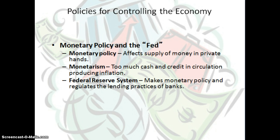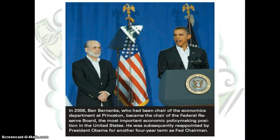The Fed also controls interest rates, which can increase or decrease the amount of loans given out. In this picture, you see Ben Bernanke, who had been chair of the Economics Department at Princeton and then became chair of the Federal Reserve Board — the most important economic policymaking position in the United States. He was also reappointed by President Obama for another four-year term as the Fed chairperson.